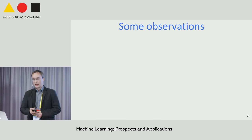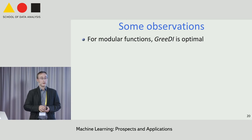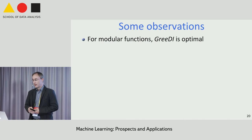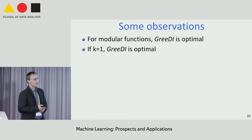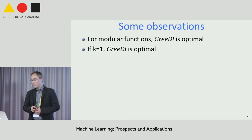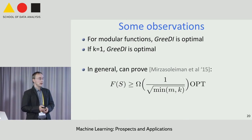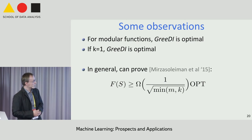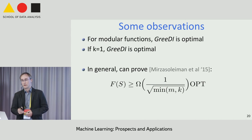Regarding analysis: if the objective is modular (additive), this algorithm is optimal—essentially distributed sorting. Also optimal when picking a single element. For a general monotone submodular function without assumptions on data partitioning, the approximation scales roughly as 1/√M in terms of number of machines. That looks pretty bad, so let's see how it actually performs in practice.